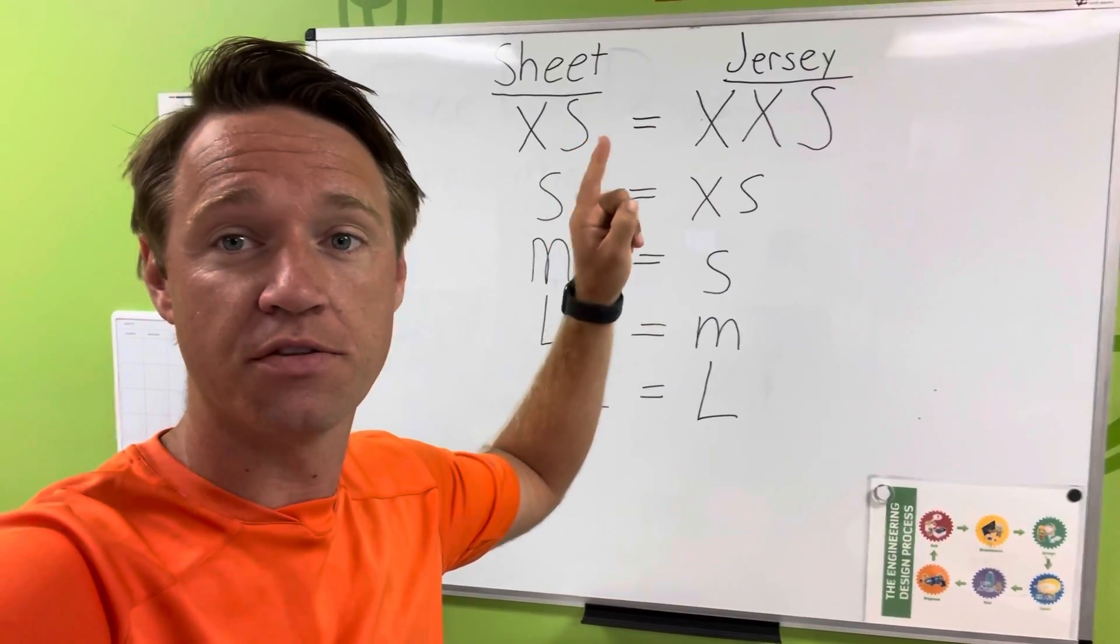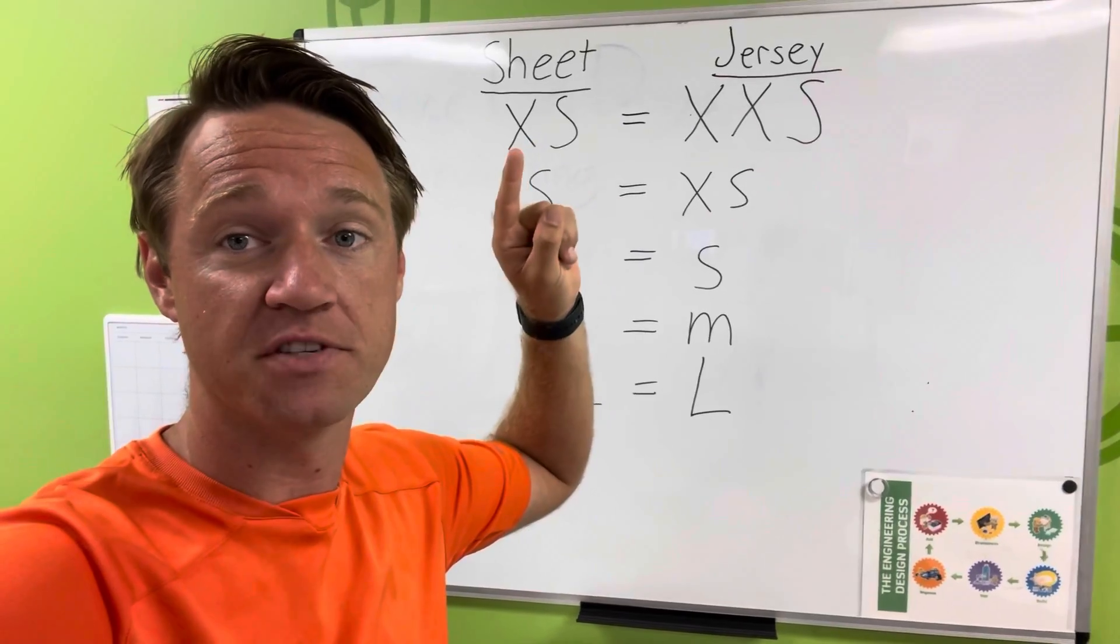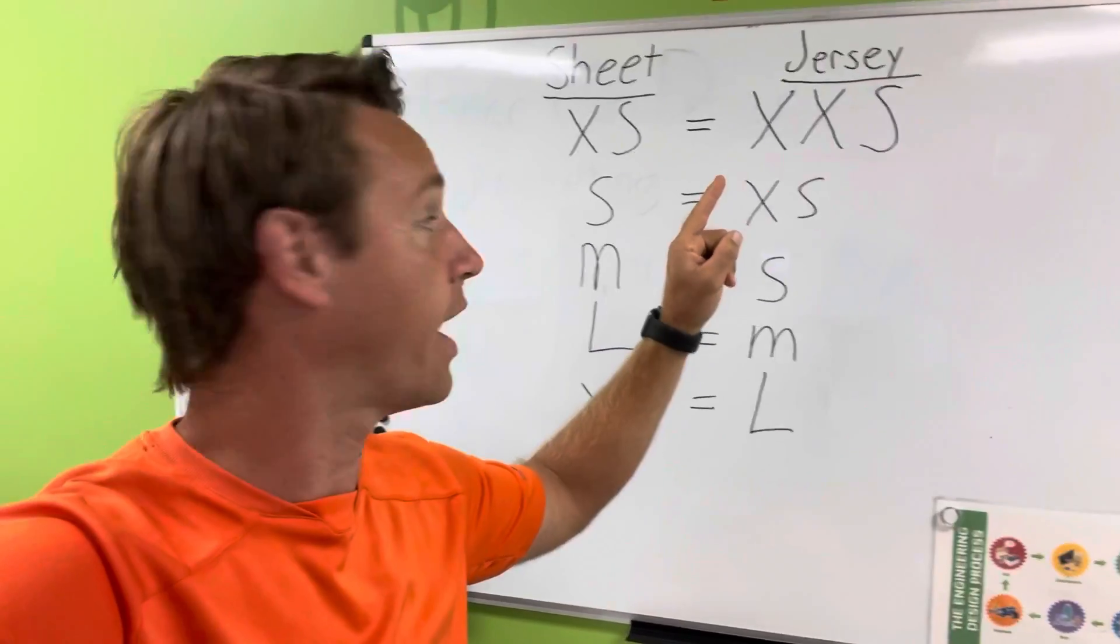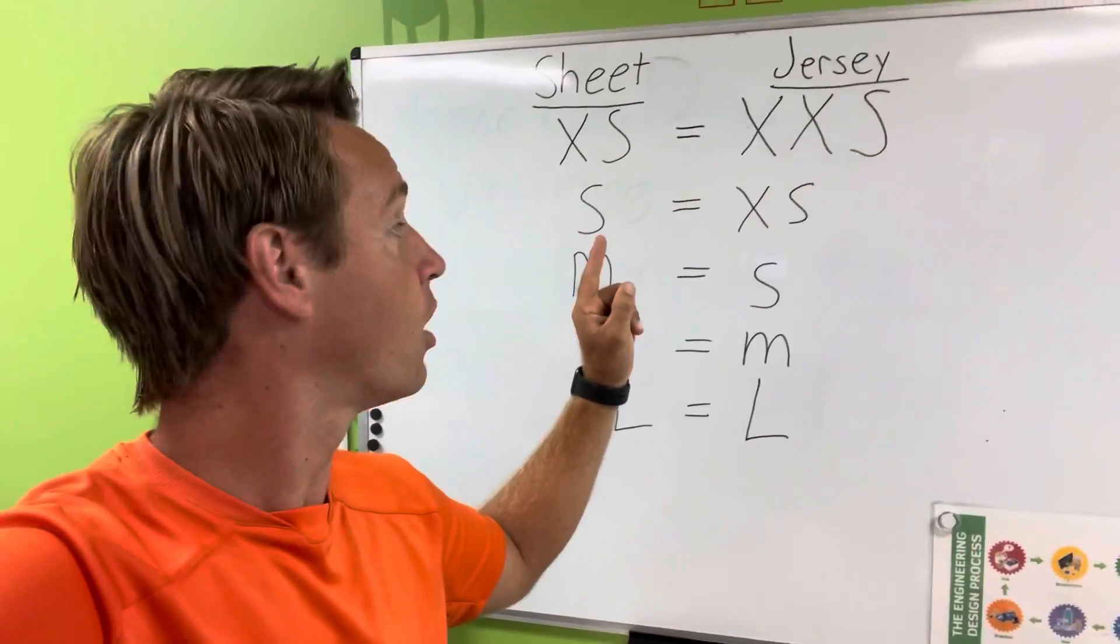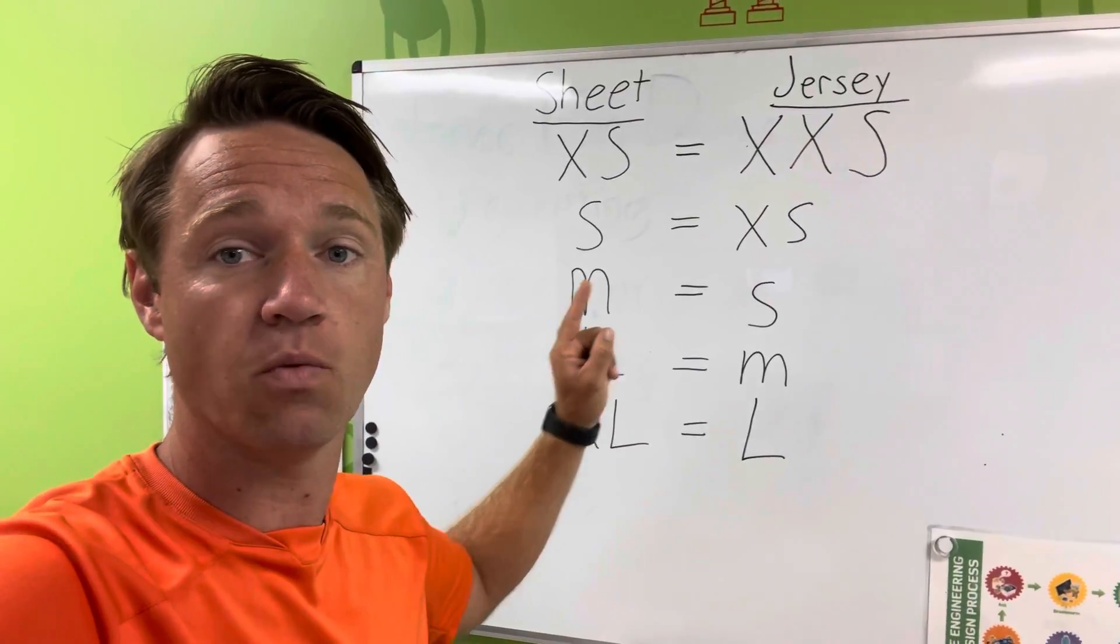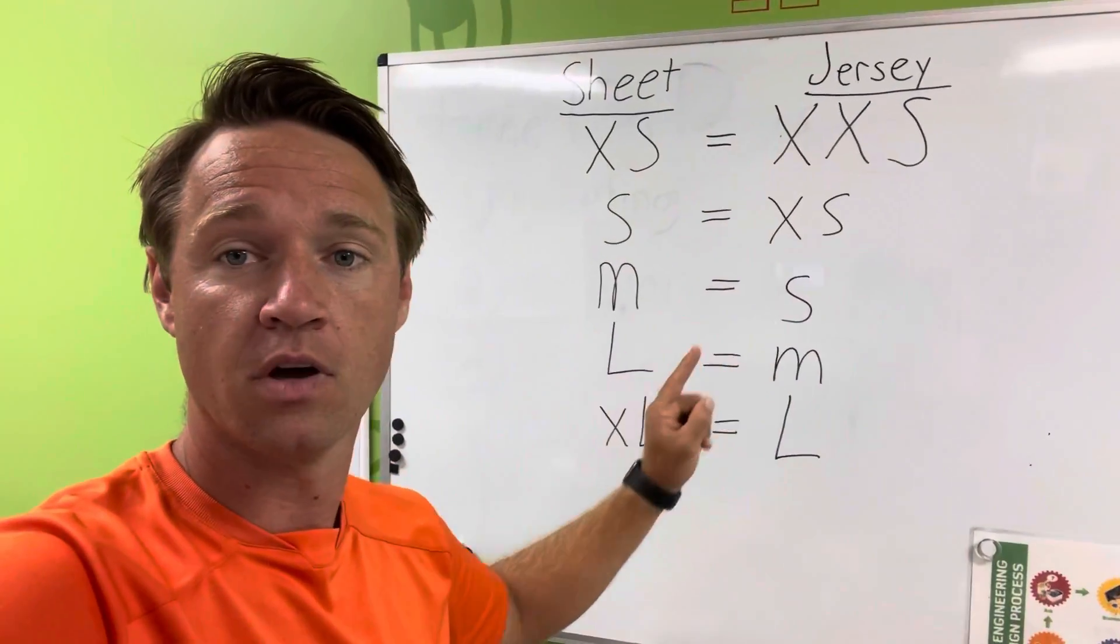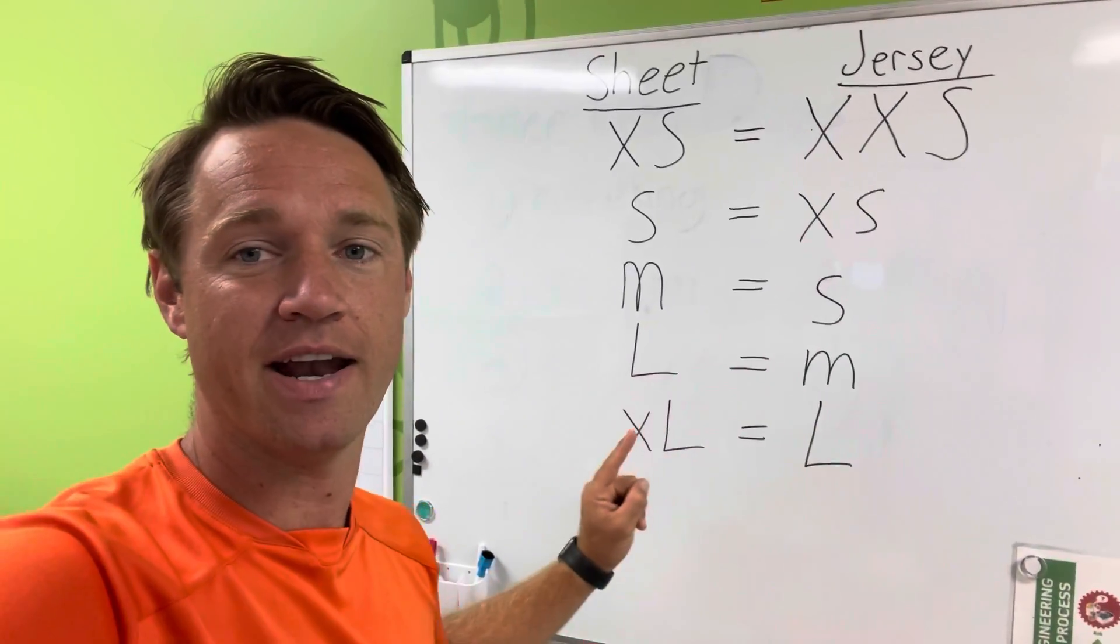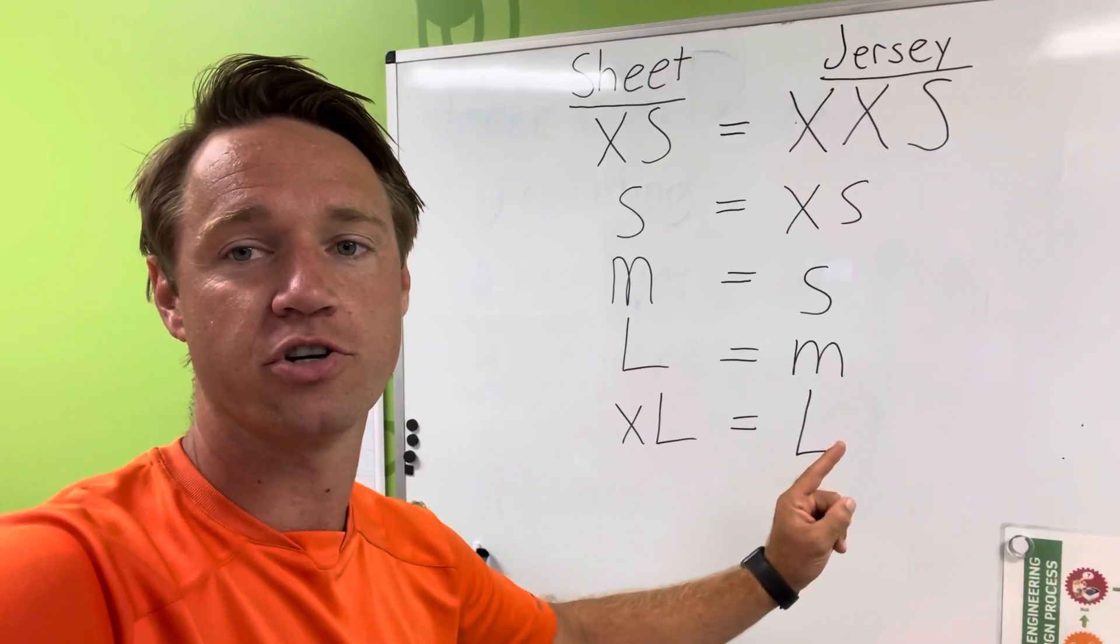They're 2T, 3T, but make sure if it says extra small that you give them an extra extra small jersey. The small jerseys are going to get an extra small. The medium jerseys on your sheet will get a small. A large jersey will get a medium jersey, and an extra large will get a large jersey.